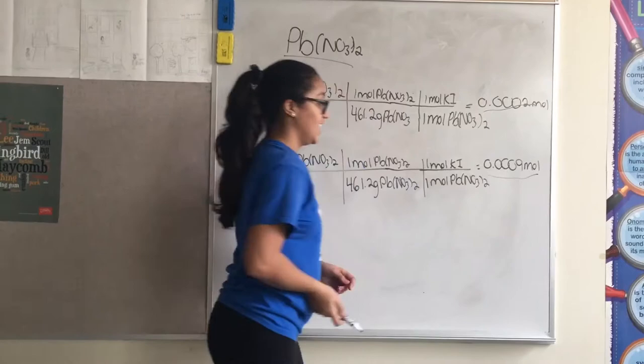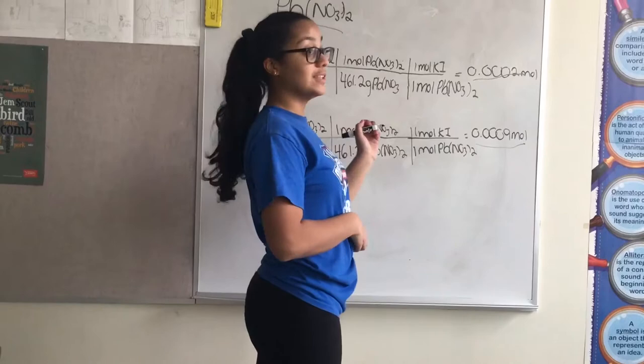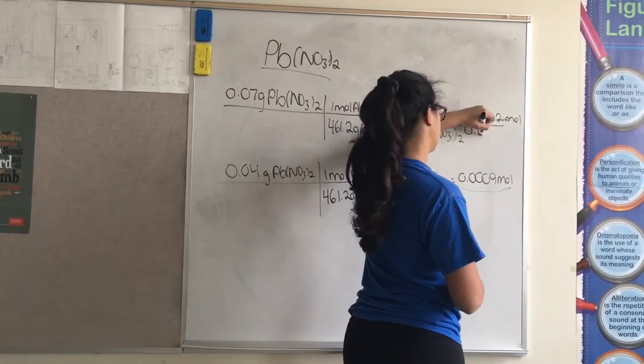Then for the next set of grams, we did the same thing. And now we have to divide each by how many liters of murder weapon we used, which is 0.001 milliliters.